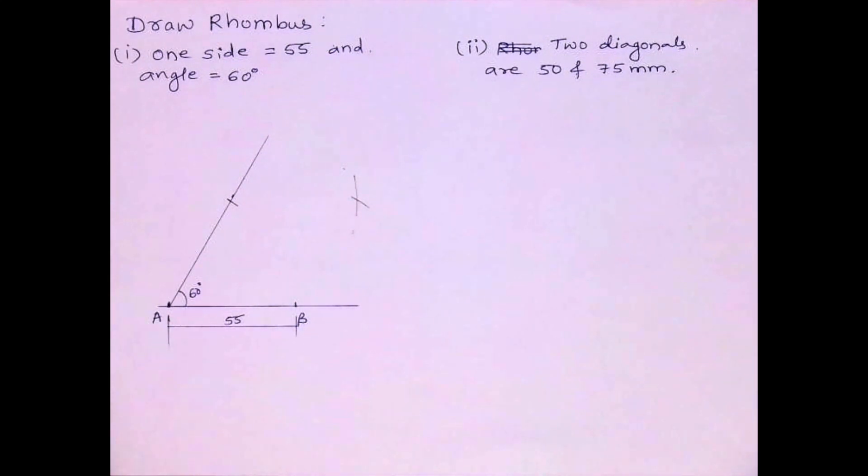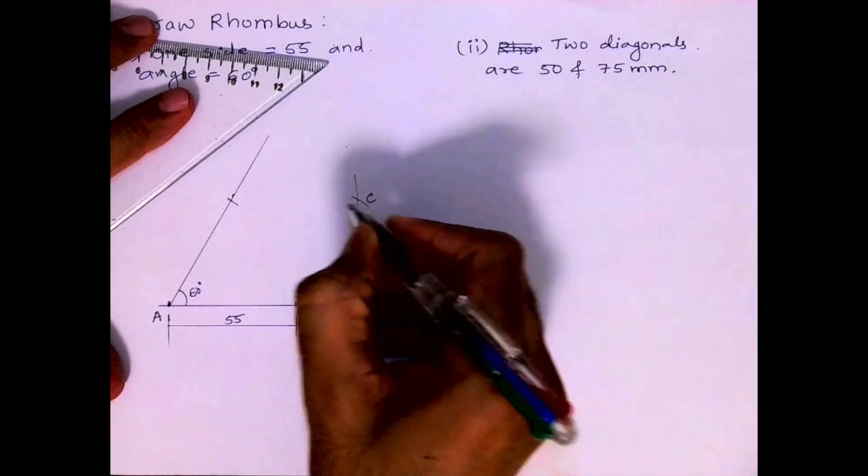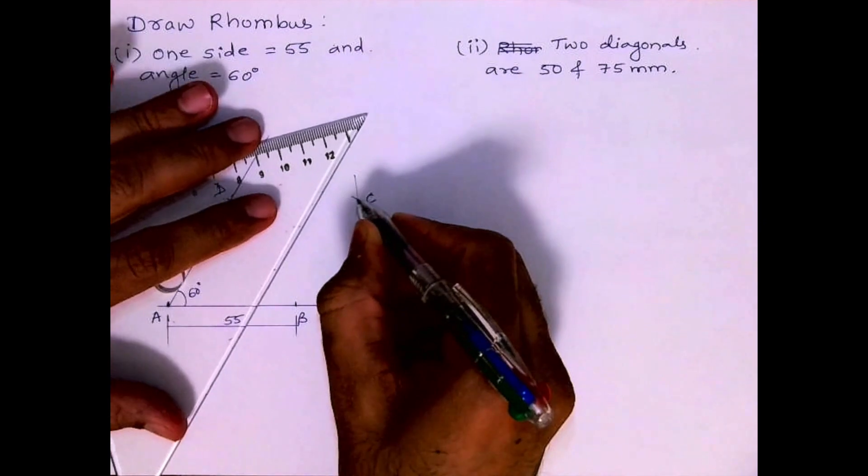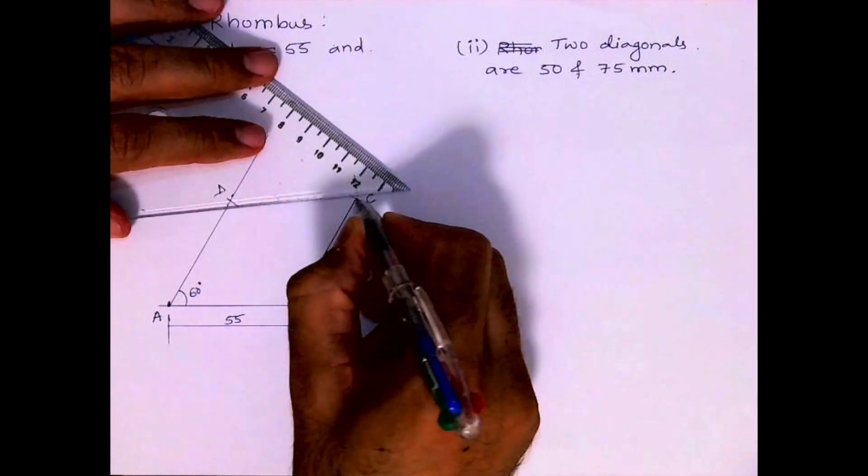So we got all the four points. This is the rhombus. See, this is C and this is D. So join B to C and C to D, and we'll get the required rhombus.